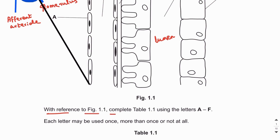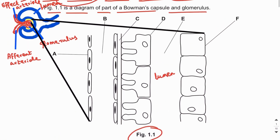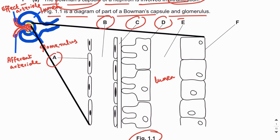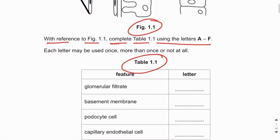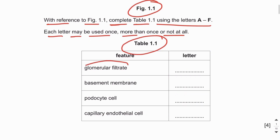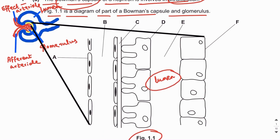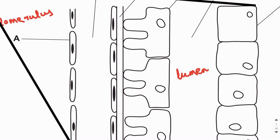With reference to figure 1.1, we have to complete table 1.1 using the letters A to F, which are labeled in figure 1.1. Each letter may be used once, more than once, or not at all. The feature is glomerular filtrate, and glomerular filtrate is found in the lumen of the Bowman's capsule.